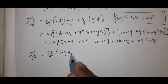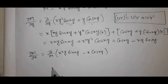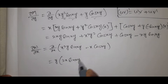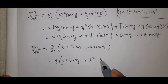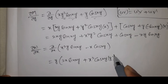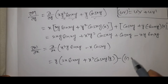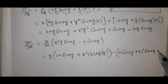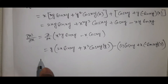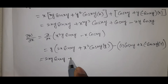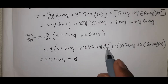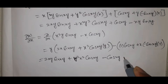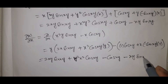Now ∂N/∂x: differentiating x²y·sin(xy) minus x·cos(xy). For x²y·sin(xy), we get 2x·sin(xy) plus x²y·cos(xy)·y, giving 2x·sin(xy) plus x²y²·cos(xy). For −x·cos(xy) using product rule: −1·cos(xy) plus x·sin(xy)·y, giving −cos(xy) plus xy·sin(xy). So ∂N/∂x equals 2xy·sin(xy) plus x²y²·cos(xy) minus cos(xy) minus xy·sin(xy).